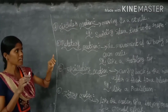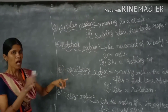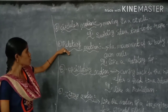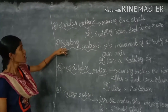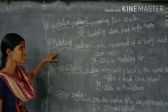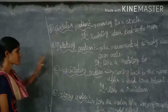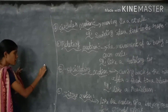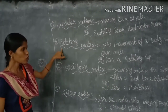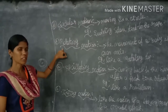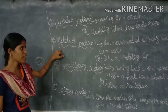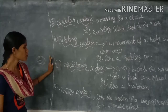The fourth type of motion is rotatory motion. This is similar to circular motion, but it is the movement of a body about its own axis. That is known as rotatory motion. For example, a spinning top.